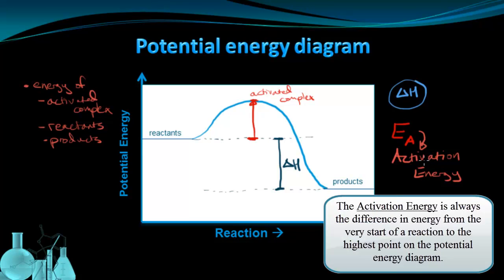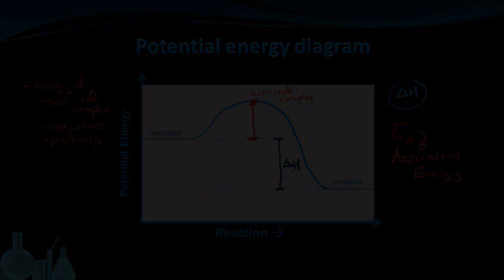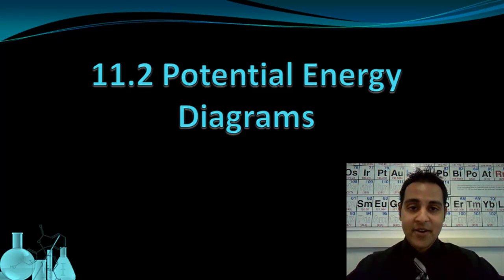The activation energy — the initial energy needed to start the reaction — is always going to be from the start of the potential energy diagram to the highest point. These are the five important quantities we can see on a potential energy diagram: the heat of reaction, the activation energy, the energy of the activated complex, the energy of the reactants, and the energy of the products. That wraps up our lesson on potential energy diagrams. Write down any questions you have in your notes and bring them with you to class.